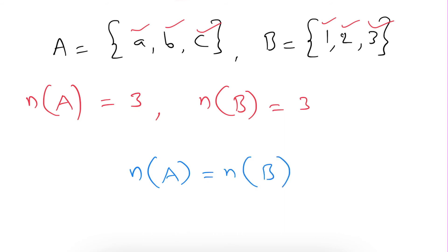If the number of elements of set A is exactly equal to the number of elements in set B, then we can say those two sets are equivalent sets. So from these two definitions, we can conclude one thing: every equal set is an equivalent set, but not vice versa.